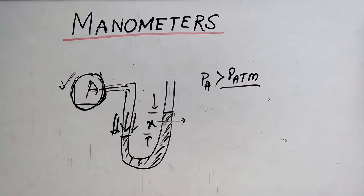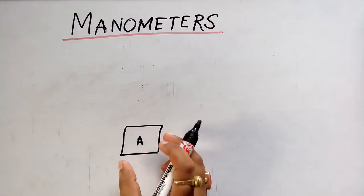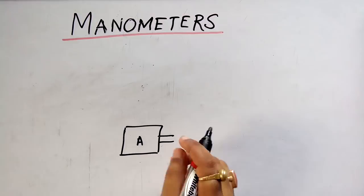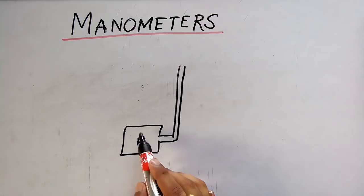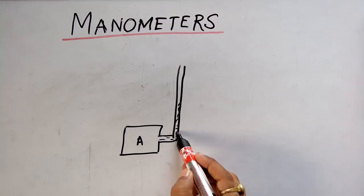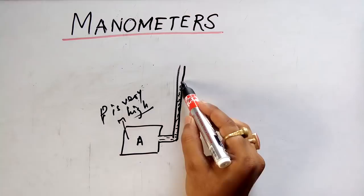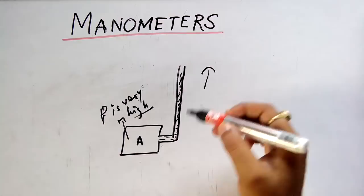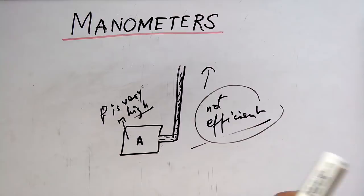Why do we need manometers? Why are piezometers not good enough? Suppose there is a system A and you want to measure its pressure with a piezometer. Due to the pressure in the system, the fluid will rise up. If the pressure is very high, the liquid will rise to a much higher level, requiring a very long piezometer tube, which is not efficient and difficult to construct.